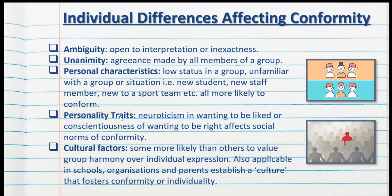Personality traits are also a factor. People who score high on neuroticism — wanting to be liked — or conscientiousness — wanting to be right — are more likely to conform. Cultural factors also need to be taken into account. Some cultures are more likely to foster conformity due to valuing group harmony over individual expression. This is applicable to schools, organisations, and parents establishing a culture of conformity or individuality. Culture here is not necessarily geographical — it can also refer to the vibe or ethos that organisations want to establish, such as school culture, work culture, or household culture.